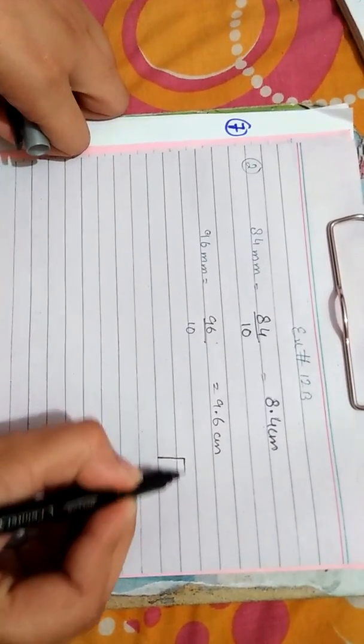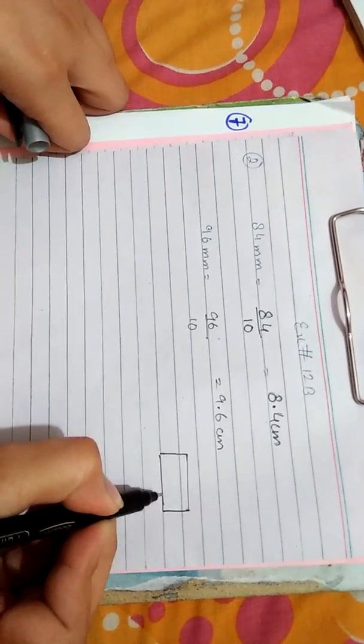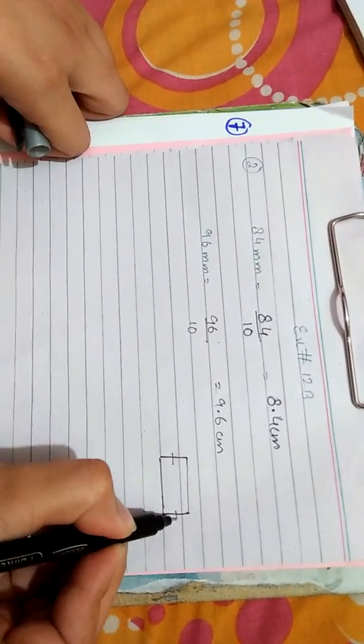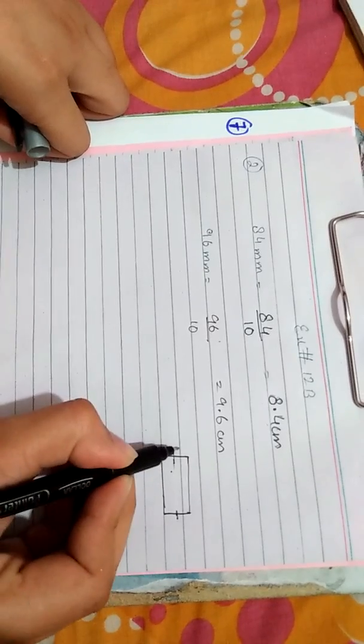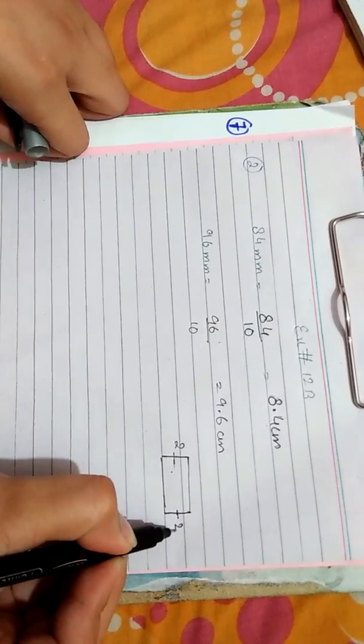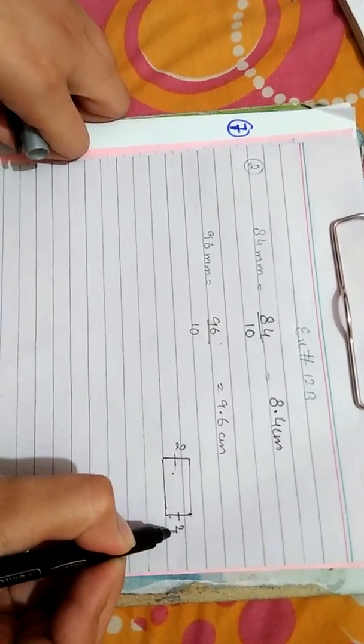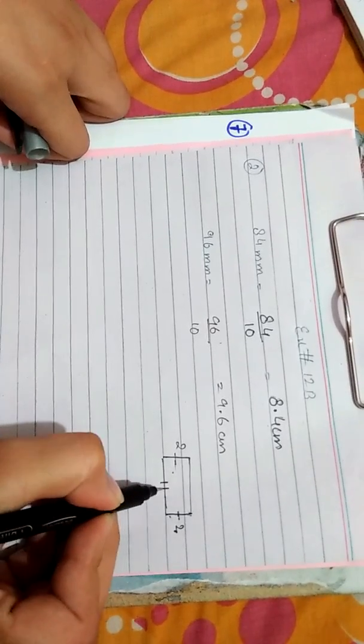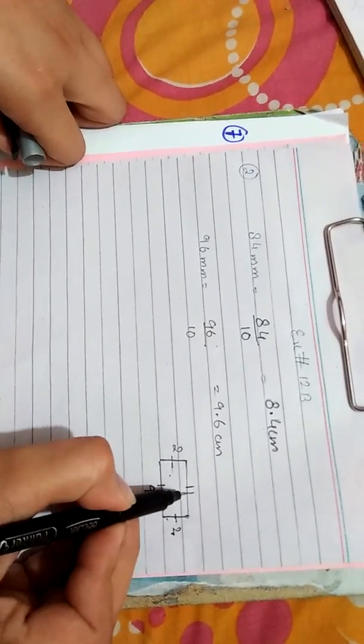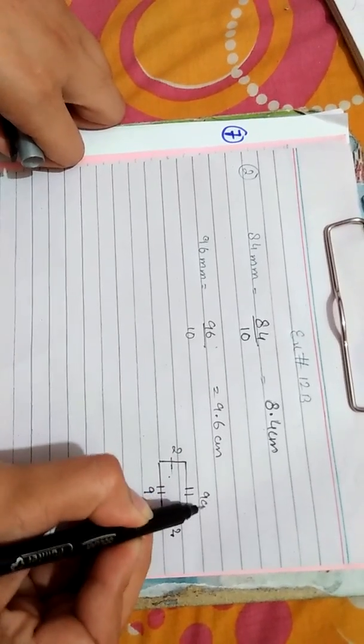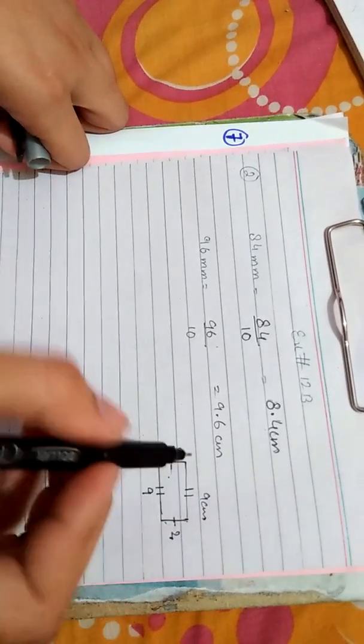Now it is a property of rectangle that the opposite sides, opposite parallel sides, are of same length. These are two opposite parallel sides. If this is 8.4 centimeter then the other side will also be 8.4 centimeter. Same is that if we have this length of 9.6 centimeter, the other opposite side will also be 9.6 centimeter.